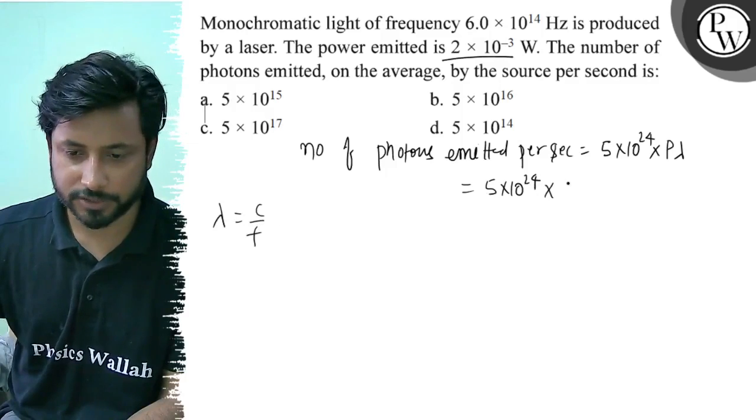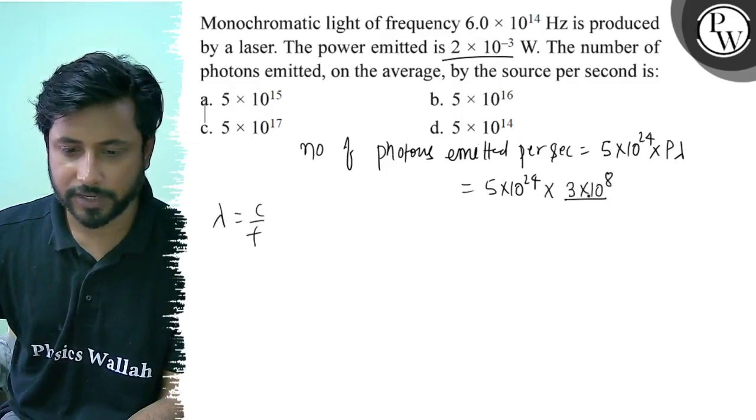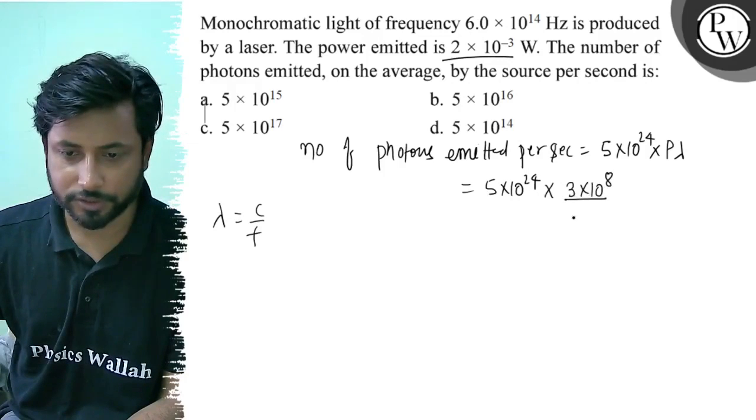So lambda equals c by f, which is 3 × 10^8 divided by f. F is 6 × 10^14.